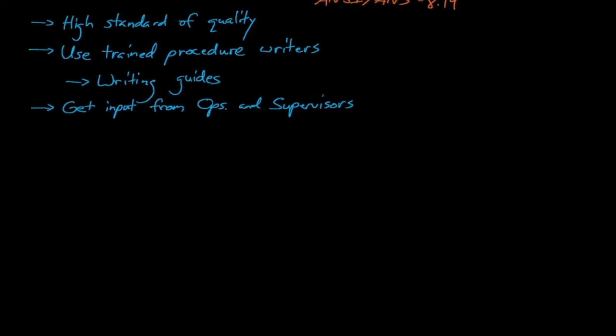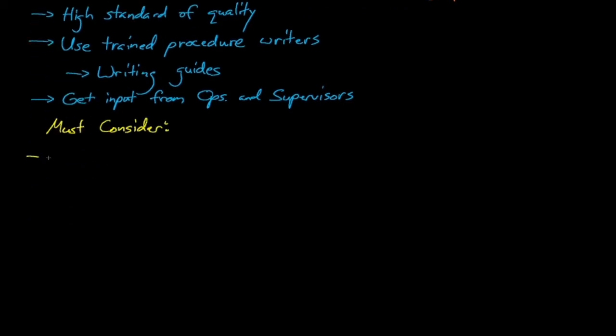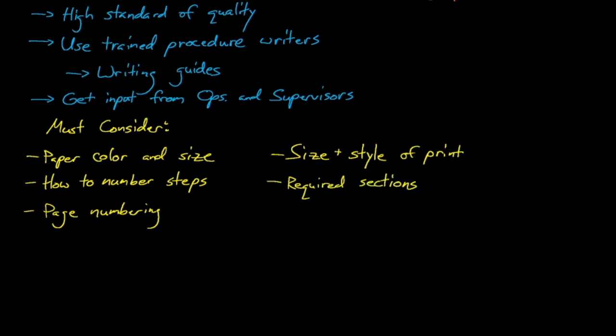Some things we'll want to consider when preparing procedures include the paper size and color, since a site might have specific color coding for different types of procedures, how to number steps so that it's clear which step comes first, how to number our pages and where to place the page numbers, the size and style of print, will key steps stick out or will they blend in with other text on the page, what content is required by the procedure, and that any abbreviations used in the procedure are universally understood by operations staff.